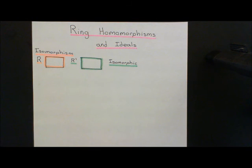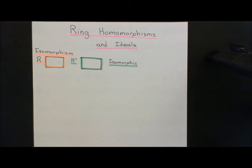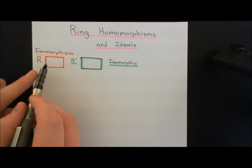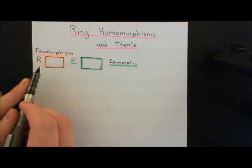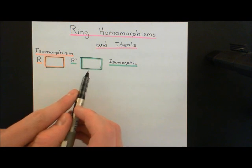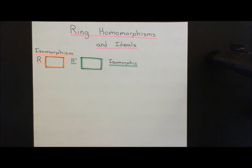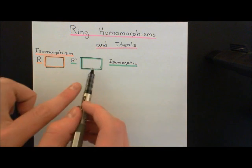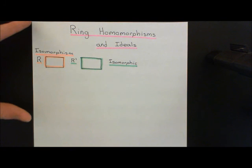So let's make this precise. If two rings are isomorphic to one another, then there should be a way of relabelling the elements in one ring with the elements in the other ring, and turning this one into that one.